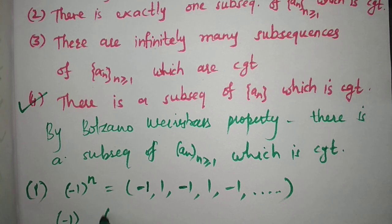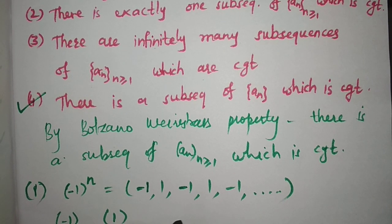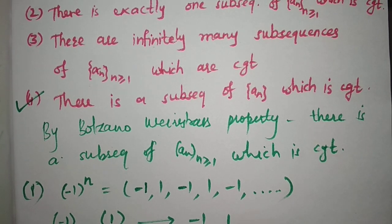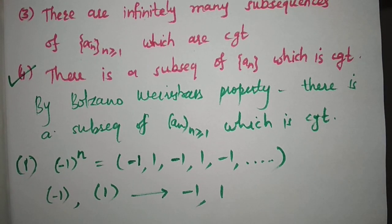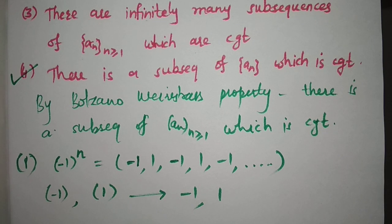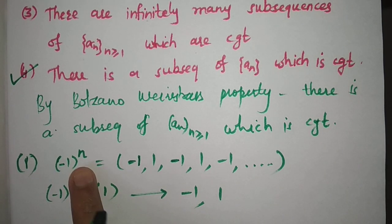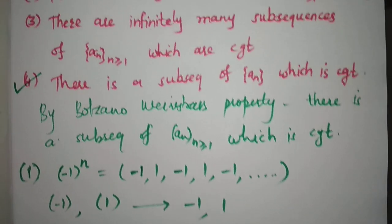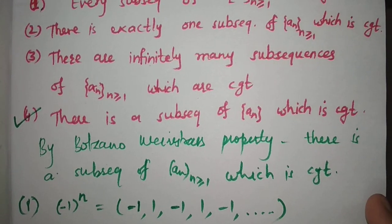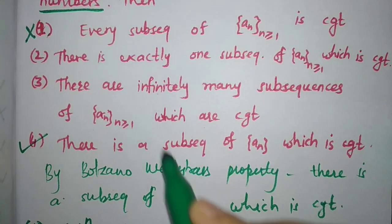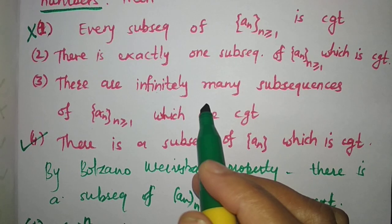The sequence (-1)^n is divergent because it has two subsequences: the constant subsequence -1, -1, -1, ... which converges to -1, and the constant subsequence 1, 1, 1, ... which converges to 1. Since two different limits exist for two different subsequences, the original sequence (-1)^n does not converge. So option 1 is false.